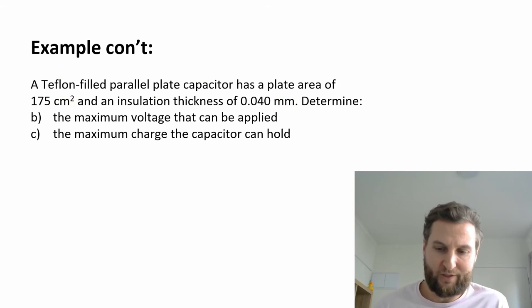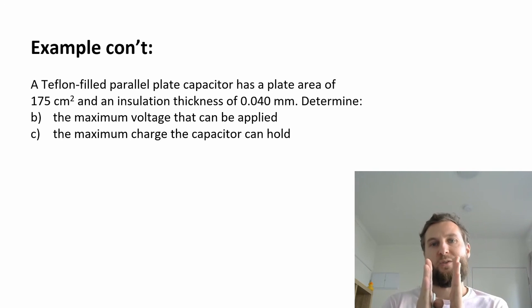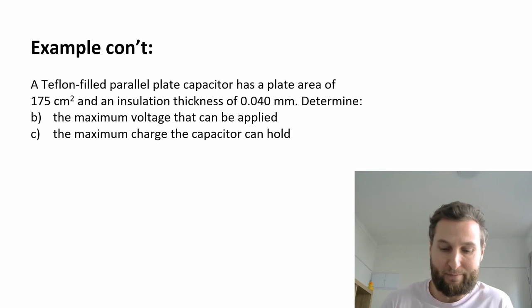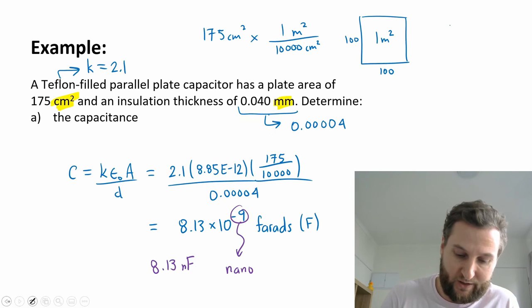Parts B and C. Now we're looking for the maximum voltage that can be applied and then the maximum charge the capacitor can hold. When we apply a voltage to our parallel plates, one of those plates is going to get saturated with negative charge and one with positive charge. If we apply too much voltage, we're going to end up pushing the charge over the gap and bridge that gap. So there's going to be a maximum charge that we can do.